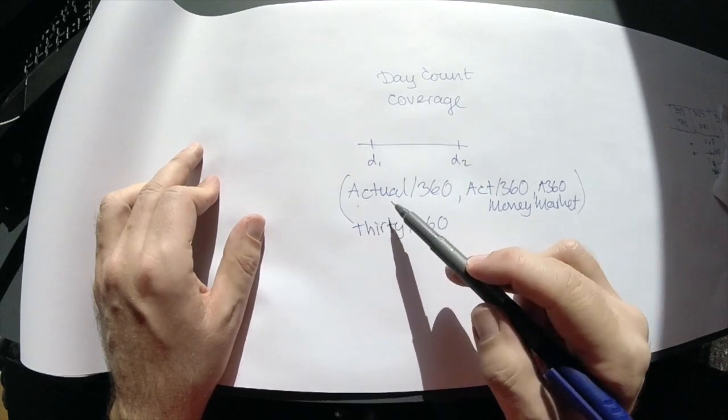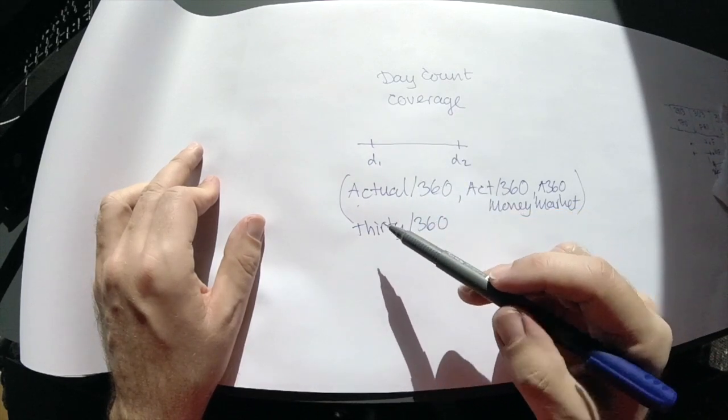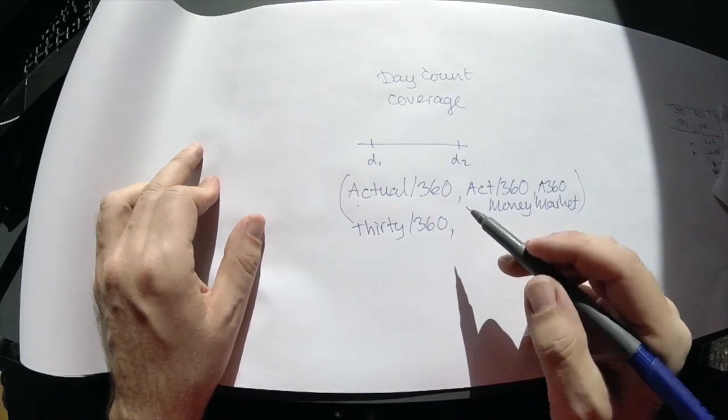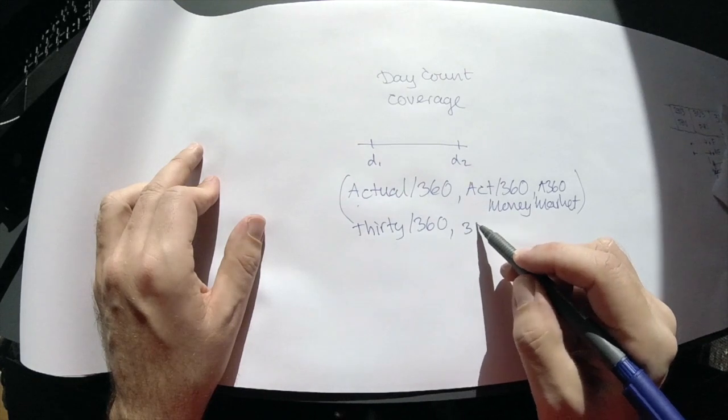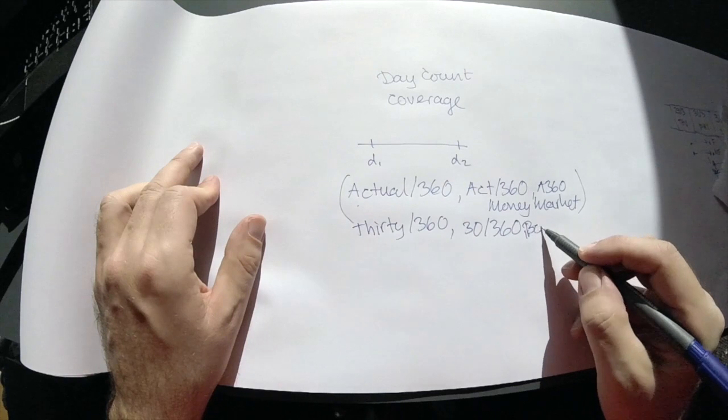In one case, we care about the actual number of days, and in the other, we pretend that each month has 30 days. We may also call that 30/360 or sometimes bond basis.